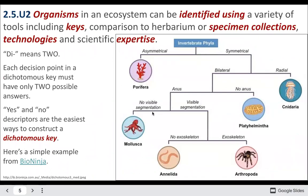Organisms can be identified using a lot of different methods. We looked at using dichotomous keys — 'di' meaning two, so you have two options. For example: Is it asymmetrical or symmetrical? Does it have bilateral symmetry or radial symmetry? Does it have an anus or no anus? Can you see segments or not? Is there an exoskeleton or no exoskeleton? From that, you should be able to identify the species.